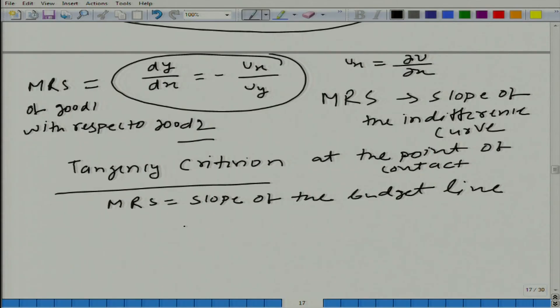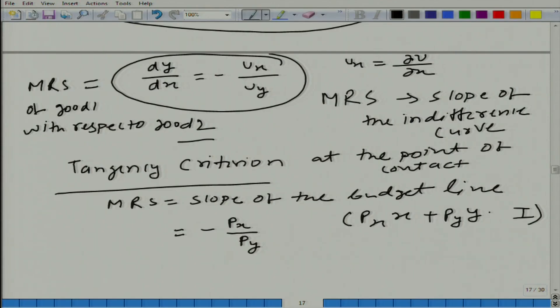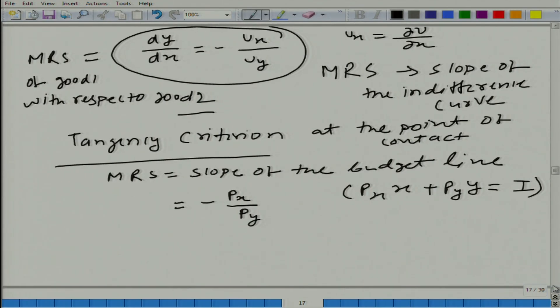And what is the slope of budget line? Minus p_x/p_y, because remember the line is p_x·x + p_y·y = I. Remember I started with less than or equal to I, but we figured out because of monotonicity, the constraint is no longer this, but constraint becomes an equality.